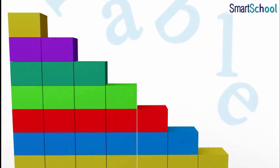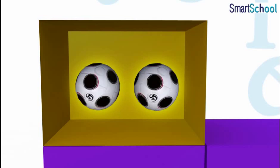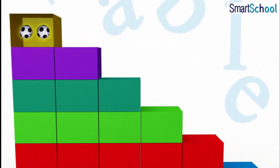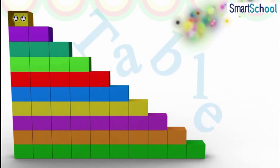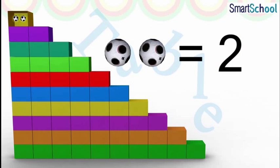Let us count the pairs of balls and build the table of two. Two balls are equal to two. Let us start.